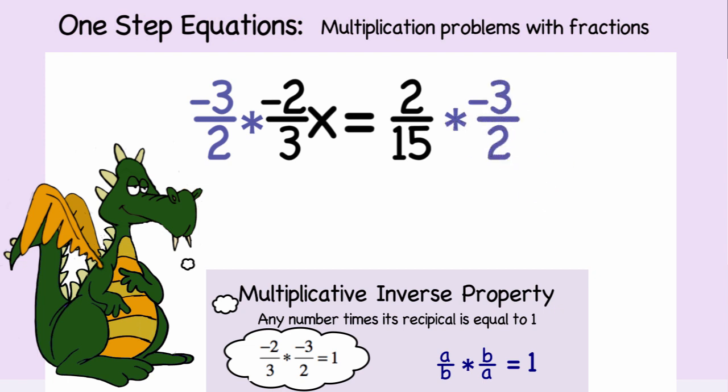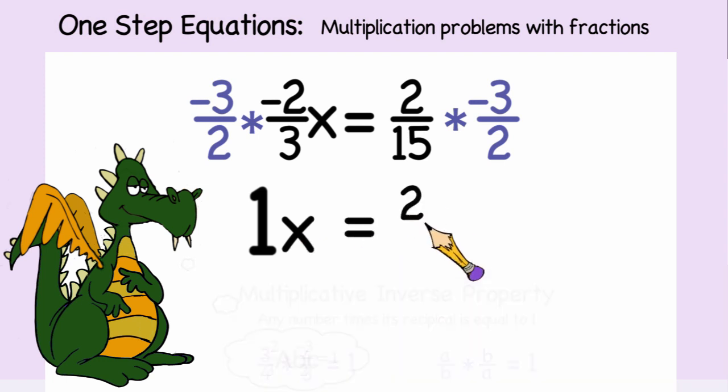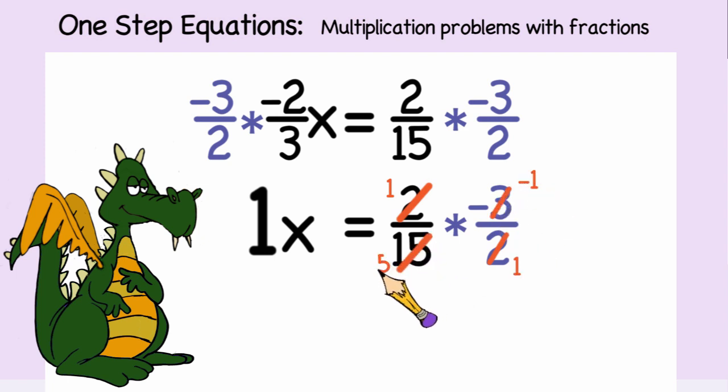Applying the multiplicative inverse property, we get 1x is equal to two-fifteenths times negative three over two. Simplifying the fraction before we actually multiply will leave us with x is equal to negative one-fifth.